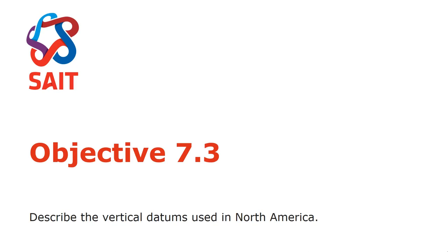Objective 7.3 is describing the vertical datums in North America. These are specific to North America, so there are some American tendencies in this. There are Canadian vertical datums as well. I'm not going to spend a lot of time on them because you'll cover them more in geodesy and map projections and in surveying. I'm just giving you an idea of the ones you're going to see on maps. There are only two.